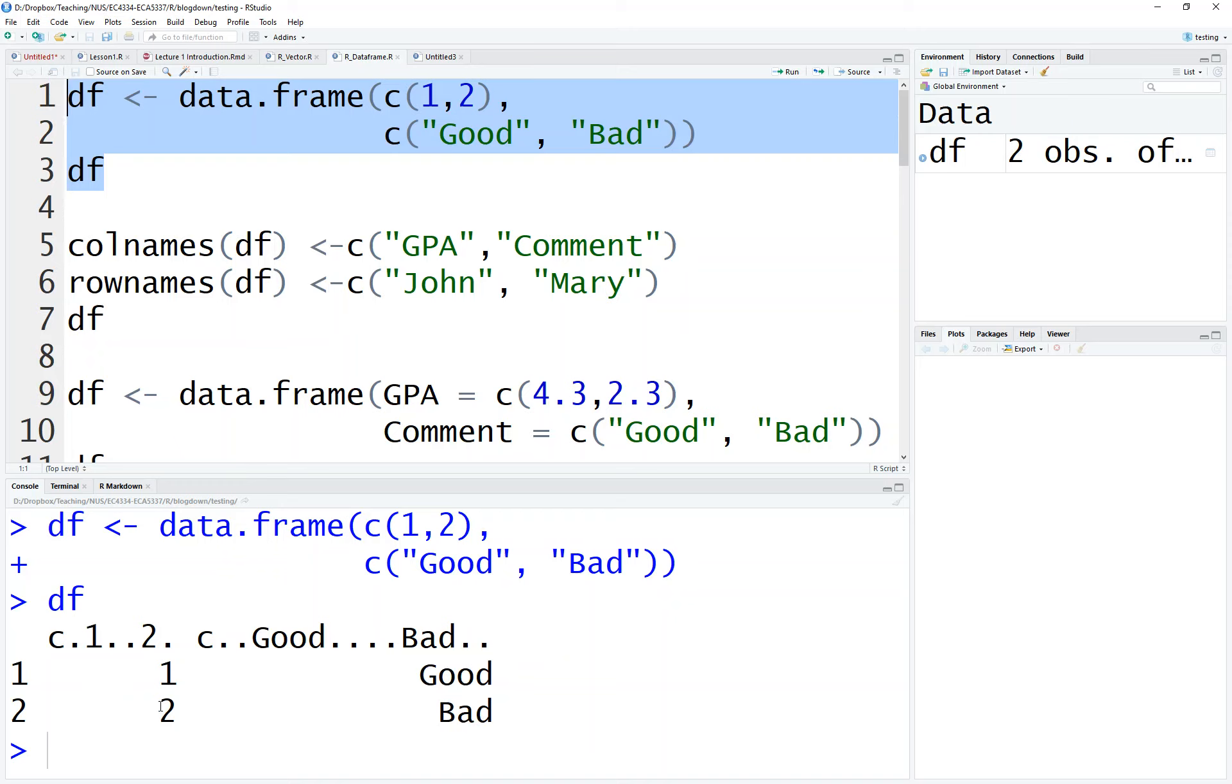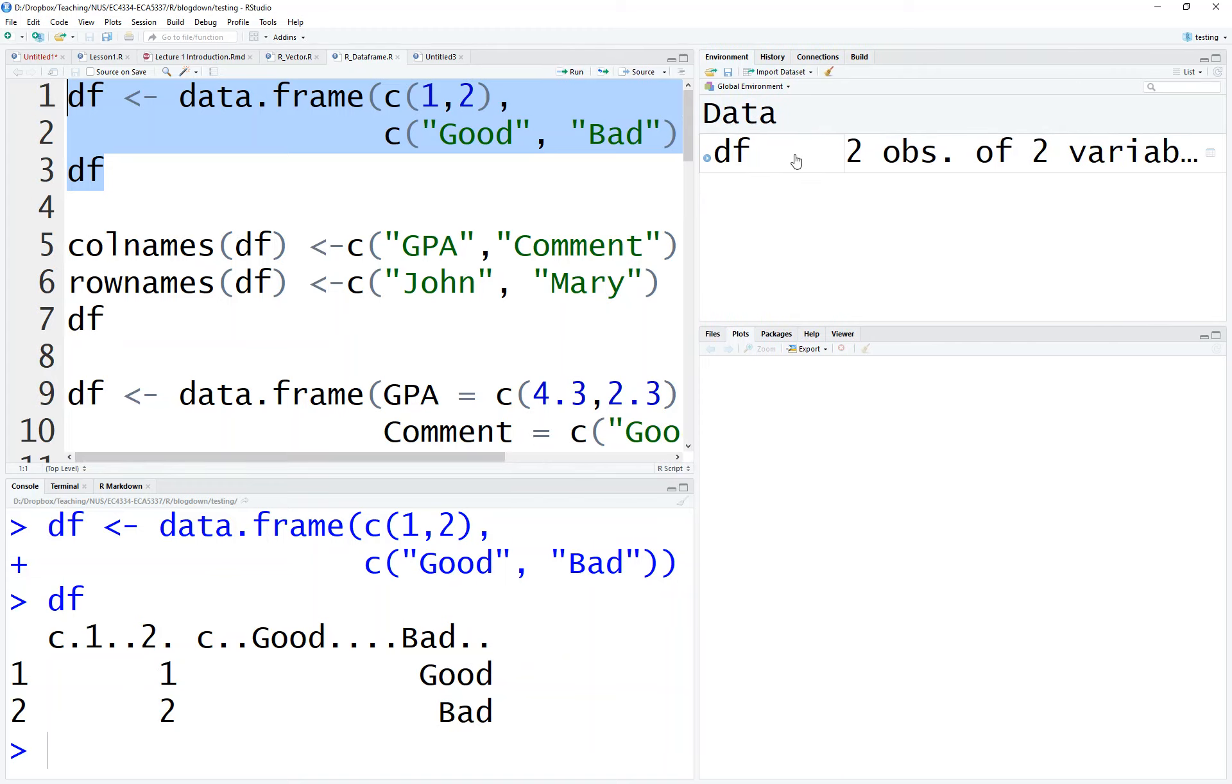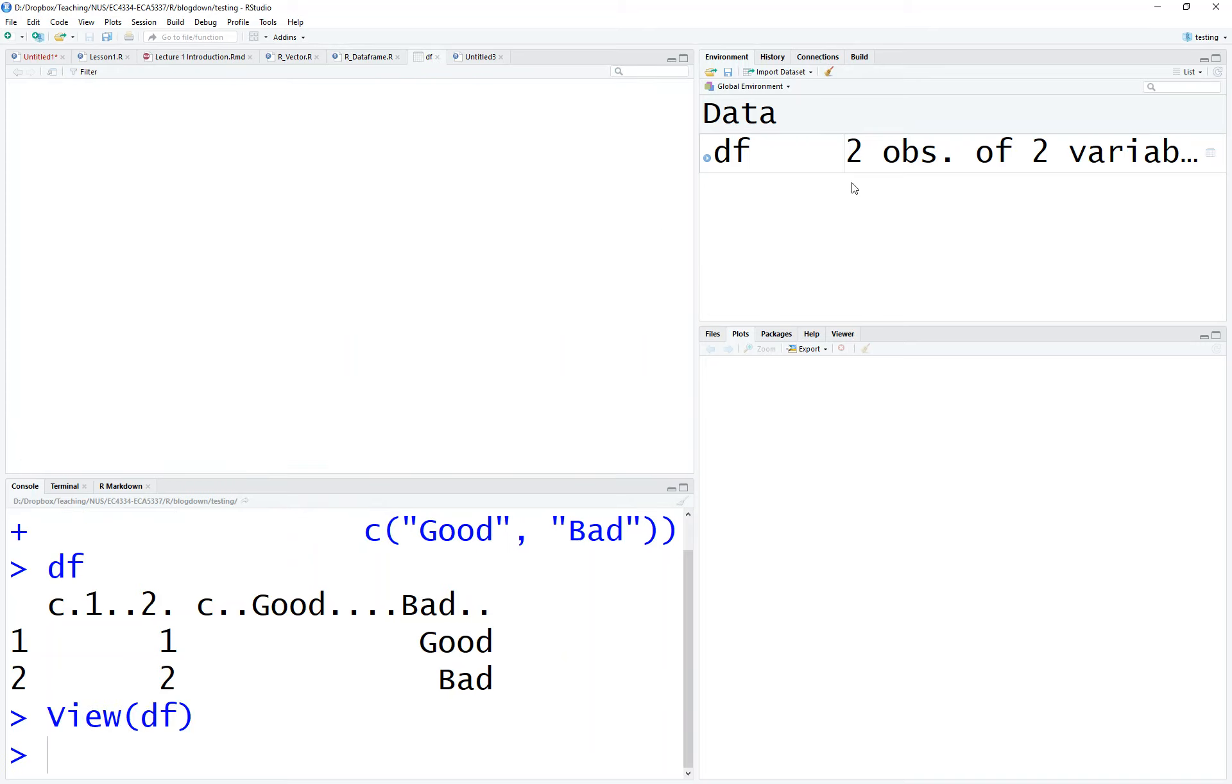Here we have one vector with one and two, and another vector with 'good' and 'bad'. The data shows two variables and two observations, like a spreadsheet. If you click view, it actually shows you what you have here visually as a spreadsheet. It's really like Excel.